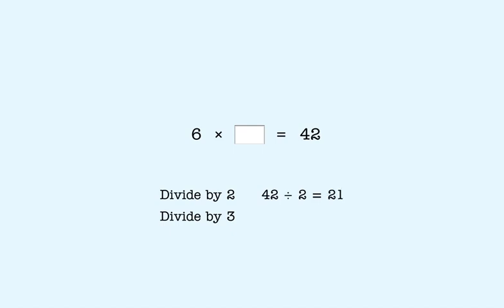Now we divide 21 by 3, and we get 7. That means the missing factor is 7. So we put 7 here. The missing factor is 7.